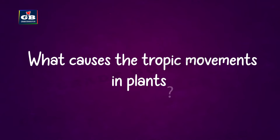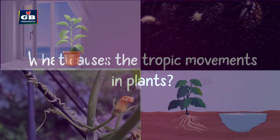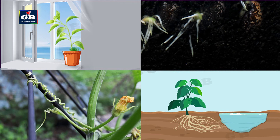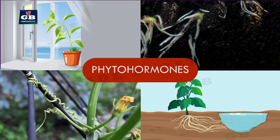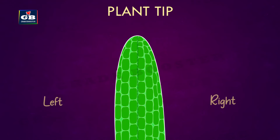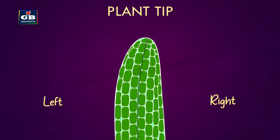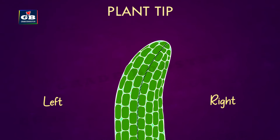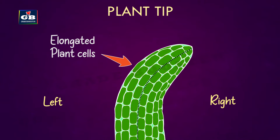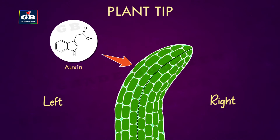What causes the tropic movements in plants? Tropic movements in plants are caused due to some special chemical compounds called phytohormones. For example, if the plant tip has to bend towards the right, the cells in the left side part of the tip get elongated, which makes the plant bend towards the right. The elongation of cells in the left half of the plant tip is caused due to a phytohormone called auxin.